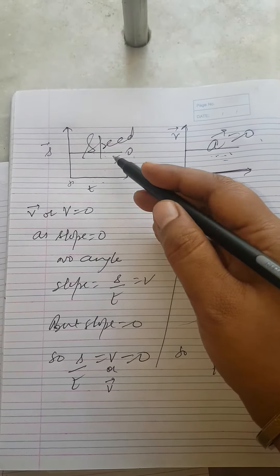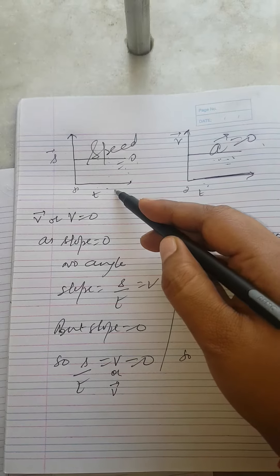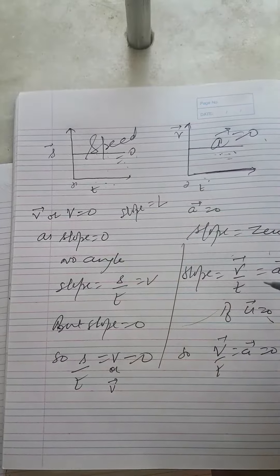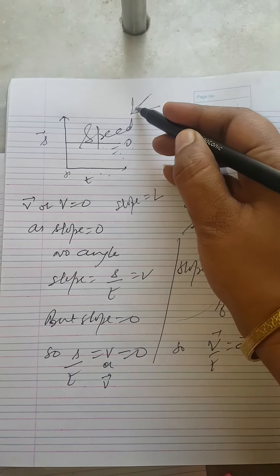So the angle is not made. So last time we discussed that slope equals to angle, which we have done this type, we have done this angle.